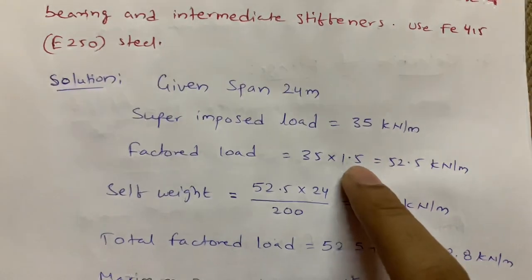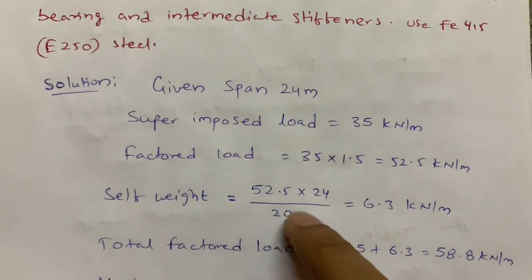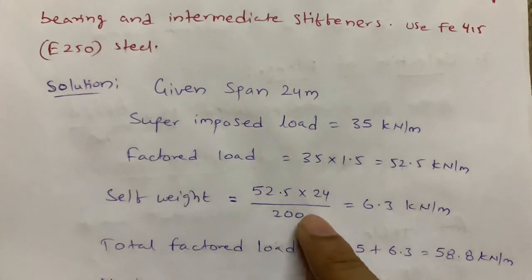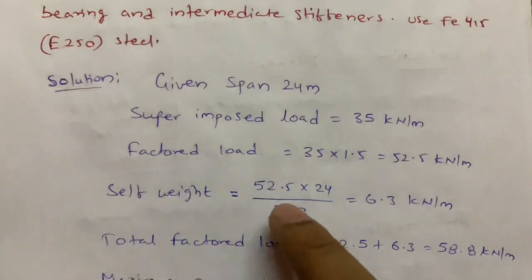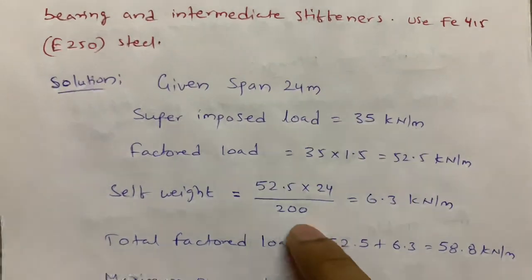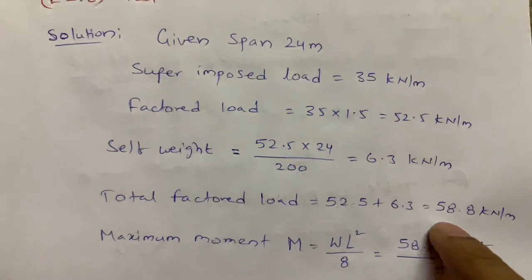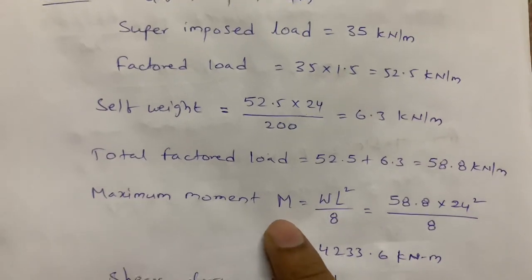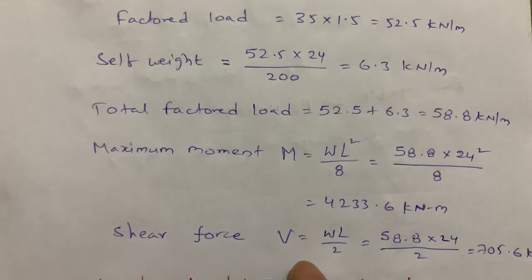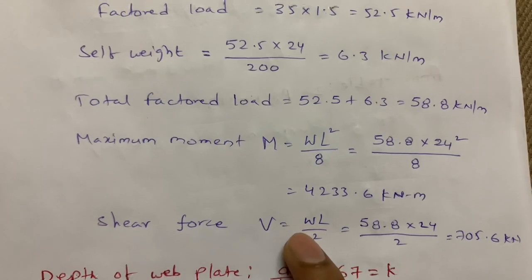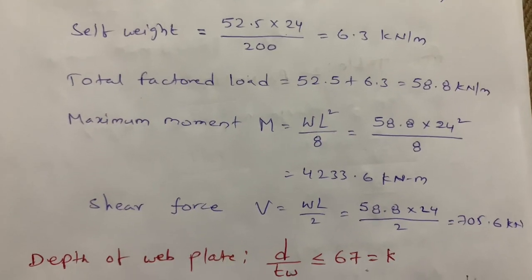The factored load is 35 × 1.5 (factor of safety) = 52.5 kN/m. The self weight is W/200, which is an empirical formula, giving 52.5 × 24 / 200 = 6.3 kN/m. Total factored load = 52.5 + 6.3 = 58.8 kN/m. Bending moment M = WL²/8 = 4233.6 kN·m. Shear force = WL/2 = 58.8 × 24 / 2 = 705.6 kN.